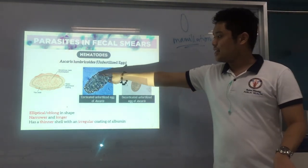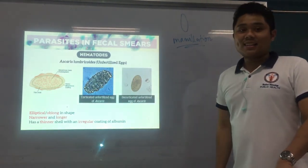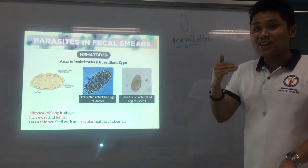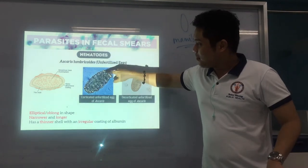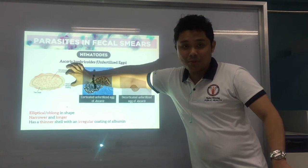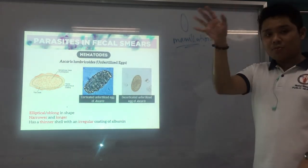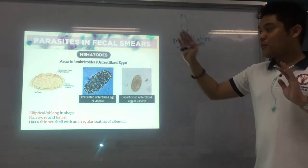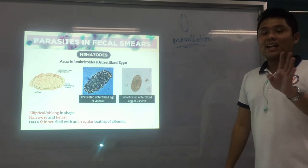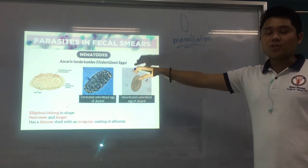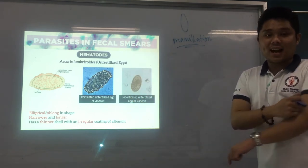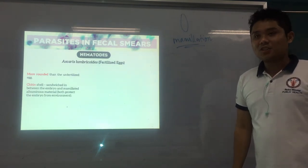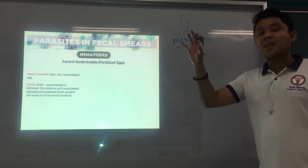Unfertilized eggs can be both corticated or decorticated. Recall the three layers: the inner vitelline layer, the middle glycogen layer, and the outermost albumin layer. If the egg has that albumin mammylated coating, it's called corticated; if it doesn't, decorticated. The fertilized egg of Ascaris is more rounded. It has a chitin shell sandwiched between the embryo and the albuminous layer, which serves as protection for the embryo.